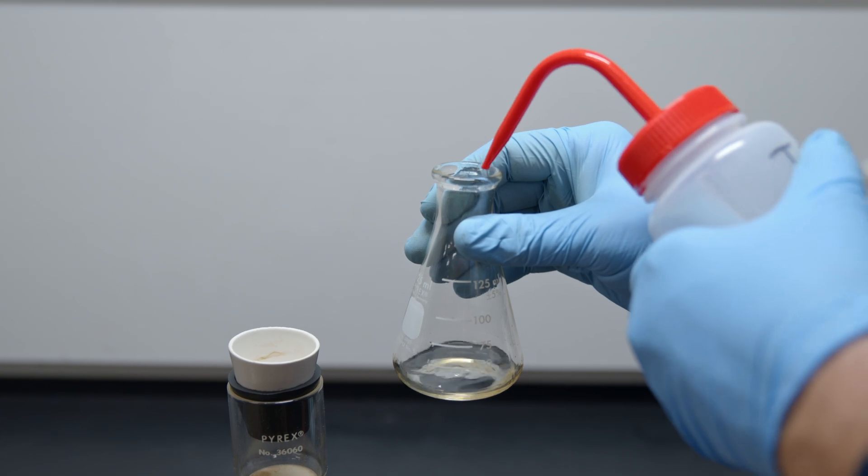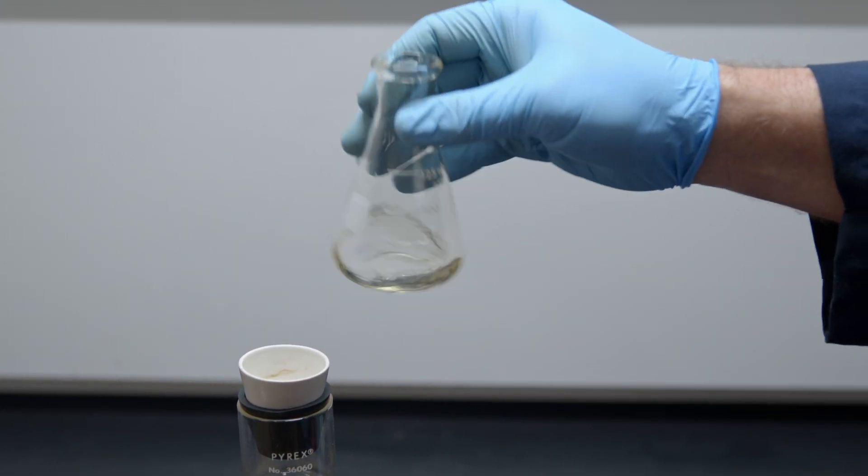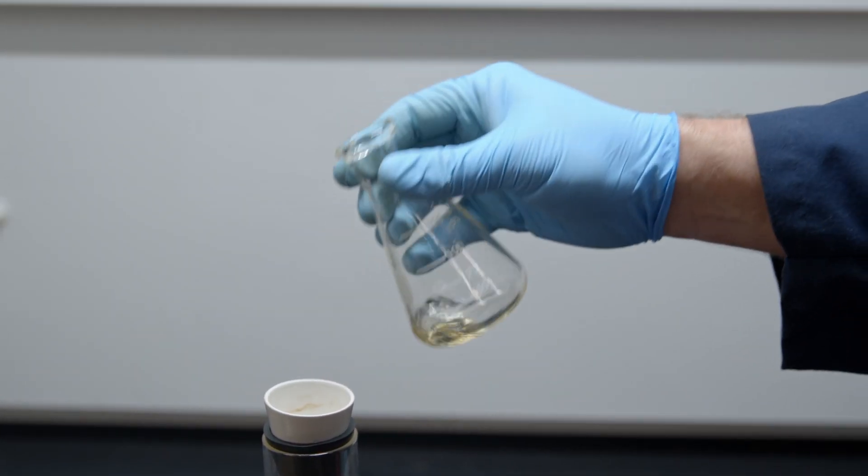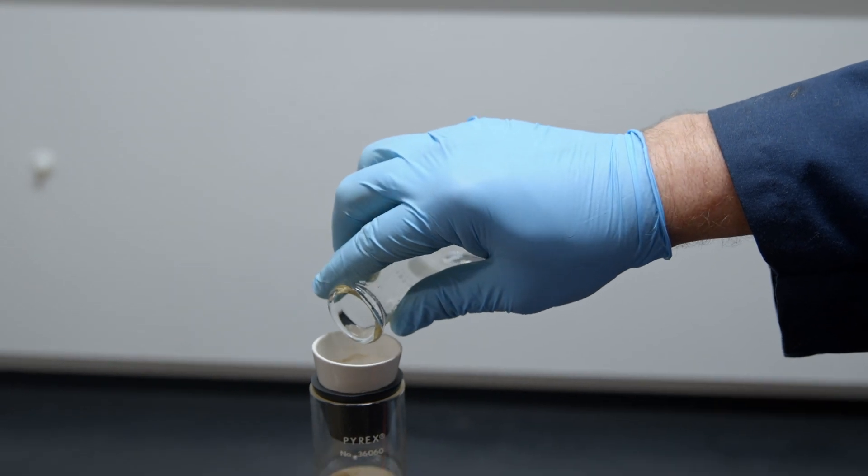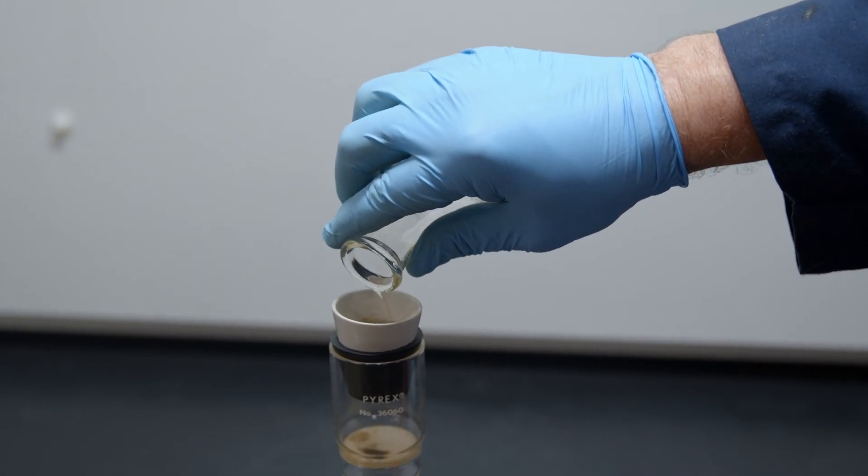Wash the container with a small amount of solvent and transfer the insoluble material to the crucible using a stream of solvent from a wash bottle.